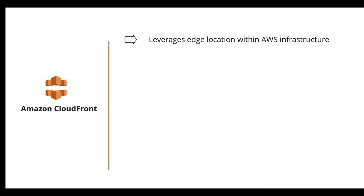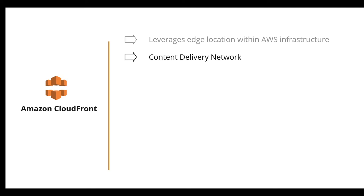Amazon CloudFront is a content delivery network that leverages edge locations within the AWS infrastructure — similar to Route 53. It distributes your content to servers around the world so users can receive content from a location near them. For example, User A's request is served from a nearby edge location, and User B's request from a location nearer to User B, dramatically improving user experience.